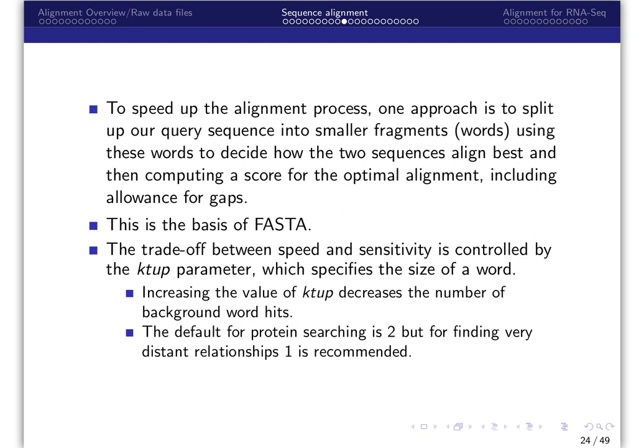The trade-off between speed and sensitivity is controlled by the KTUP parameter, which specifies the size of a word. Increasing the value of KTUP decreases the number of background word hits. The default for protein searching is two, but for finding very distant relationships, one is recommended.